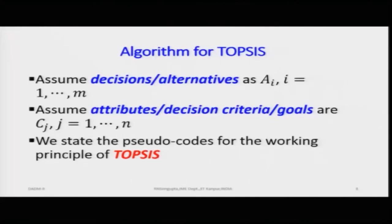We rank each criteria individually - ranking alternatives A1 to Am for criteria one, then criteria two, then three, through criteria N - and find the cumulative overall ranking based on cumulative scores. We define decision alternatives as A_i (i = 1 to M) and attributes or decision criteria as C_j (j = 1 to N), giving alternatives A1 to AM and criteria C1 to CN.